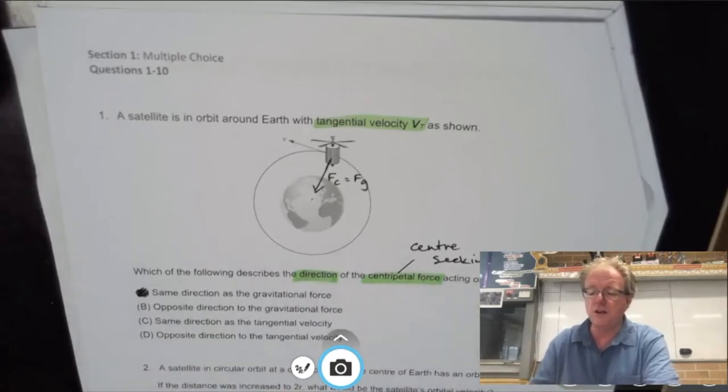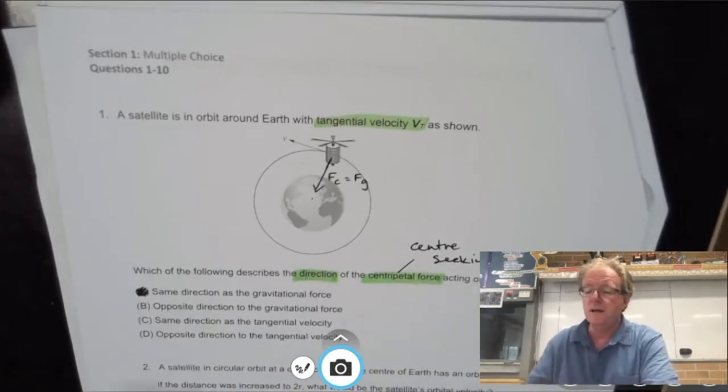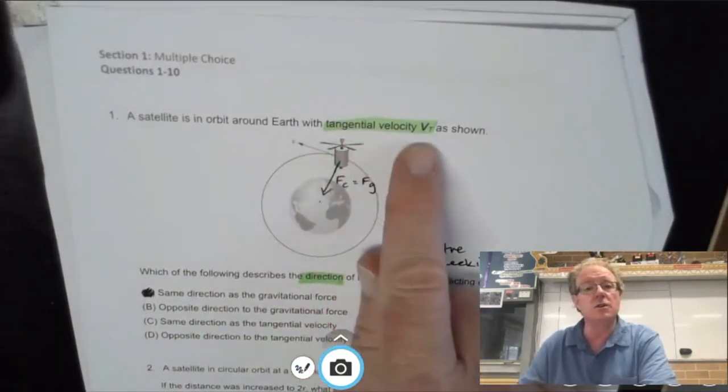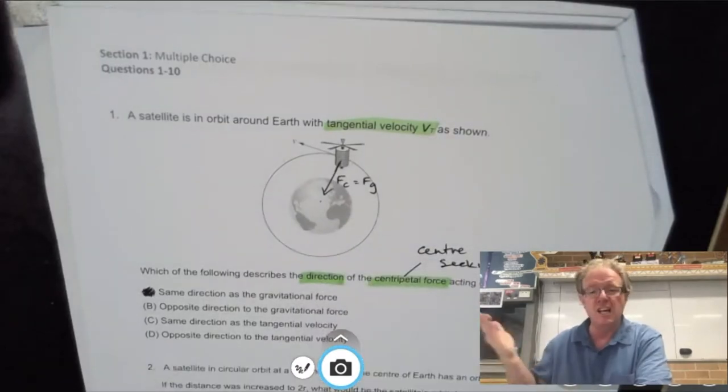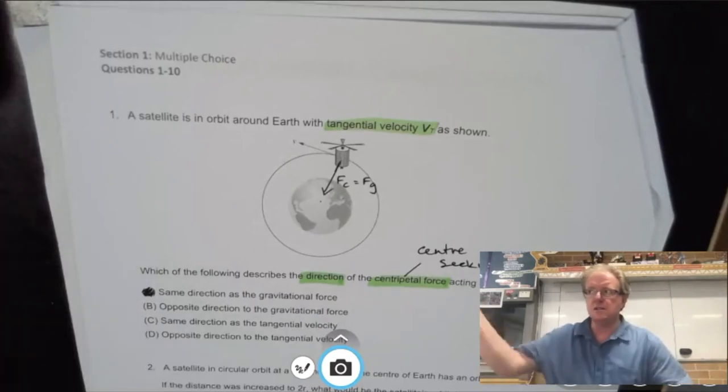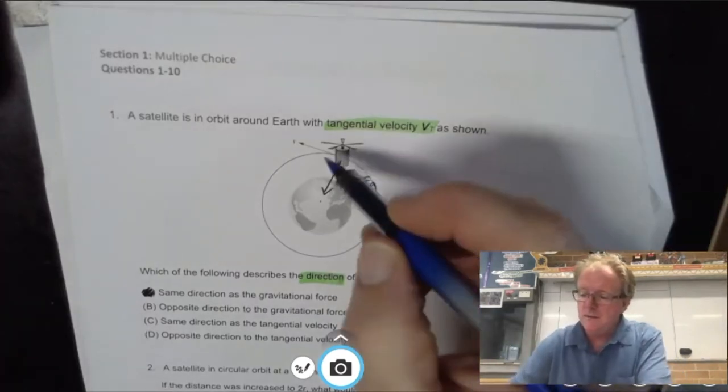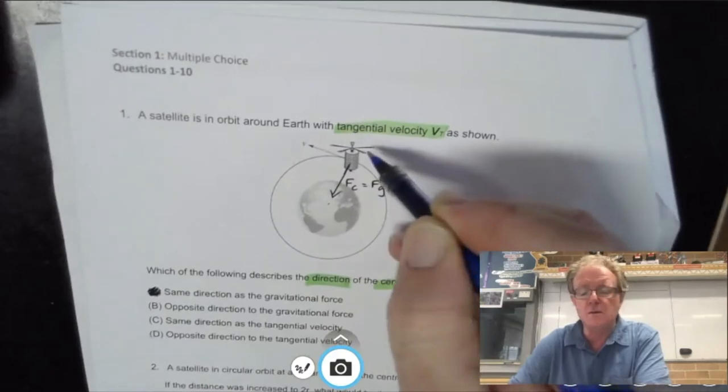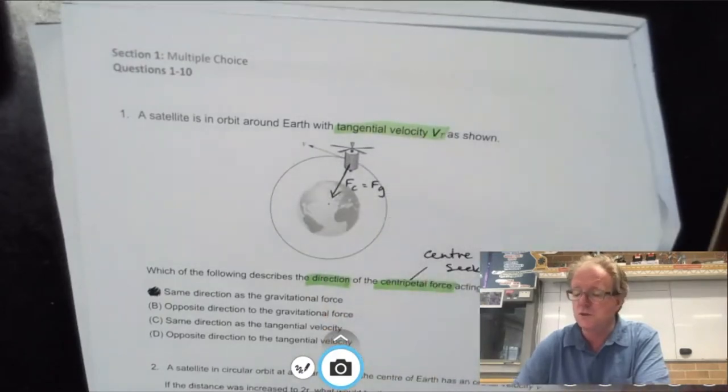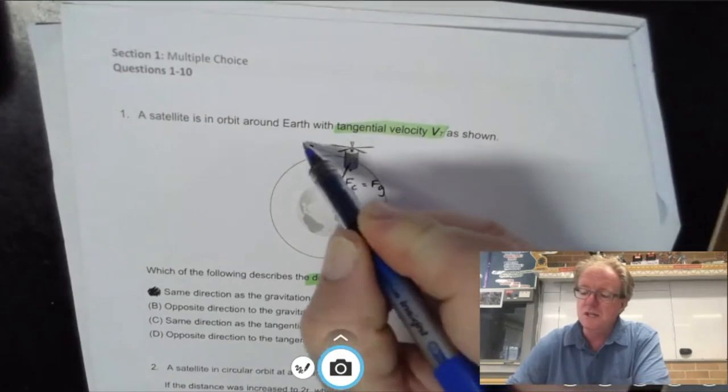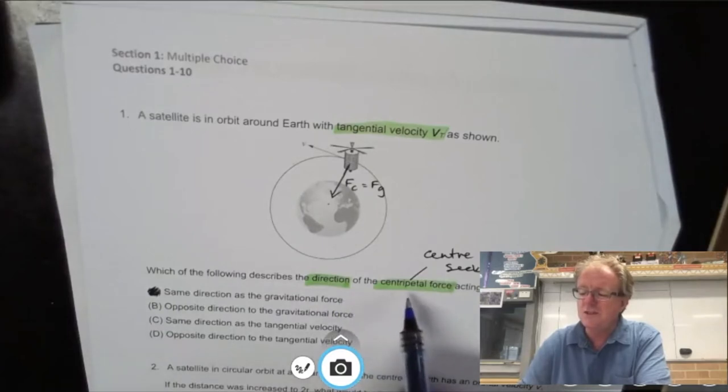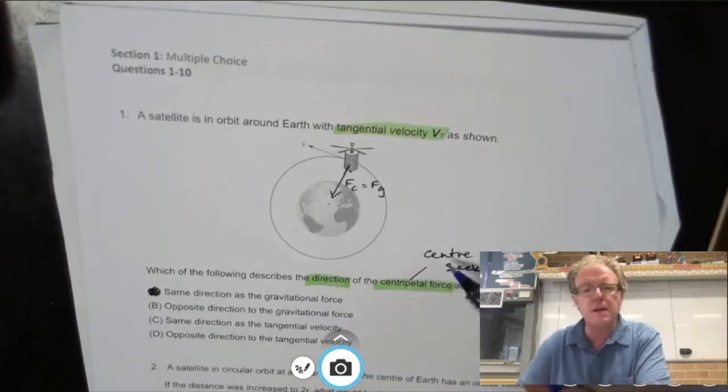As you can see here I've already highlighted a few things. It says a satellite is in orbit around Earth with tangential velocity. I've highlighted tangential velocity - you need to know what that is. The velocity is at a tangent to the motion of the satellite. The satellite's going in circular motion and the tangential velocity is this one here. Now it says which of the following describes the direction of the centripetal force? Well, remember centripetal means centre seeking, so by pure definition it's going into the centre of the circle.